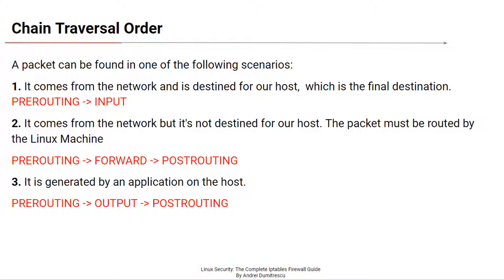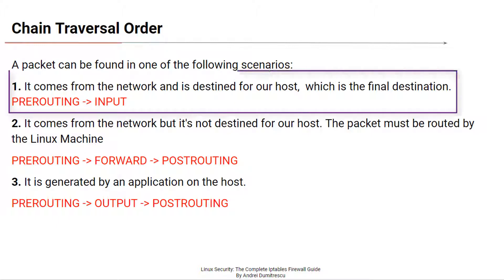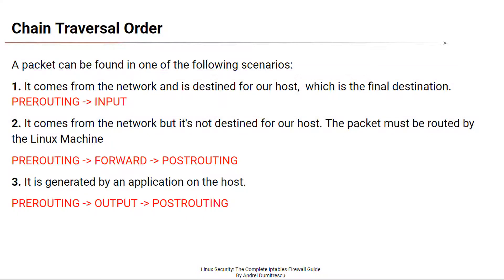A packet can be found in one of the following scenarios. In the first scenario, it comes from the network and is destined for our host, which is the final destination of the packet. In this case, the packet traverses the pre-routing and then the input chains.